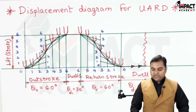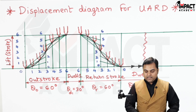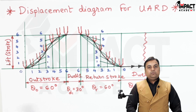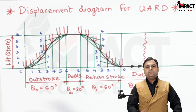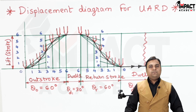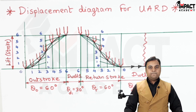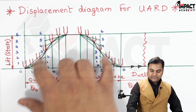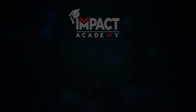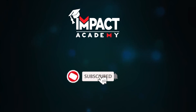In this video we have seen how to draw the displacement diagram for UARD motion. Both the outstroke and return stroke had UARD motion, but in problems, UARD can apply to either outstroke, return stroke, or both. We have seen the method to plot it using the UARD approach, indicating the follower motion. If you find the videos helpful, please like, share, comment, and subscribe to the channel.